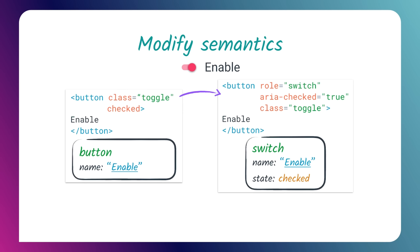ARIA can also modify existing element semantics. For instance, if you have a button element you want to turn into a toggle button — an on/off switch type control — you can give it a role of switch and an aria-checked state of true or false, making it a more specific kind of control. It's important to note that the switch role is part of the newer ARIA 1.1 spec, so there may be assistive technologies that don't support it yet. Just like all web standards, ARIA is constantly evolving, so always check for AT support of any ARIA role before using it.